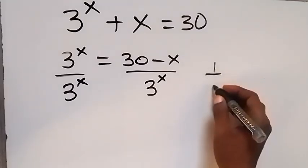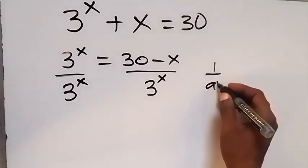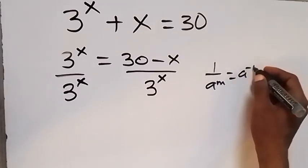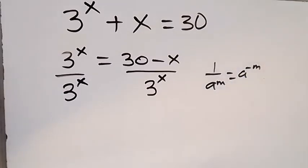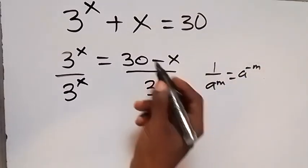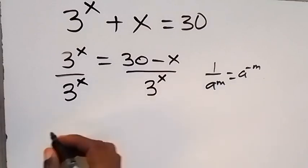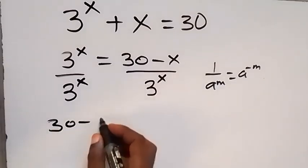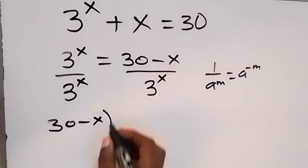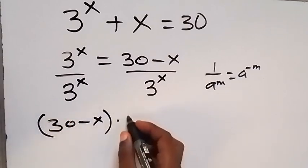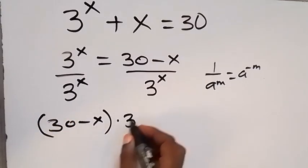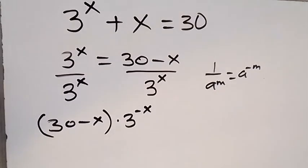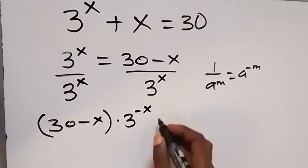From the law of indices, 1 over a raised to power m can be written as a raised to power minus m. So this side can be written as 30 minus x multiplied by 3 raised to power minus x, instead of 1 over 3 raised to power x.